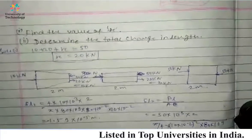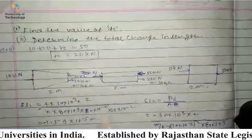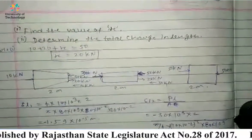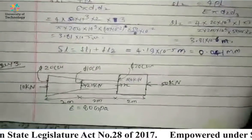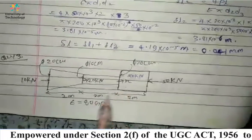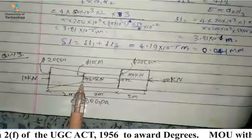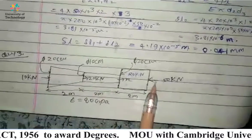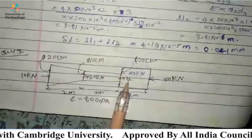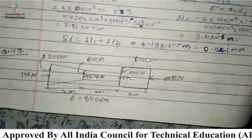We have to determine the total change in length and also find the value of x. Looking at the diagram again, x is the unknown load applied on one section. In the sections, the loads are 10 kN, 20 kN, and 50 N respectively, and we have to find the load x applied on that part.